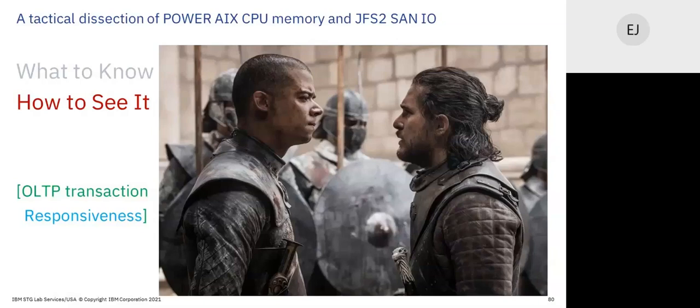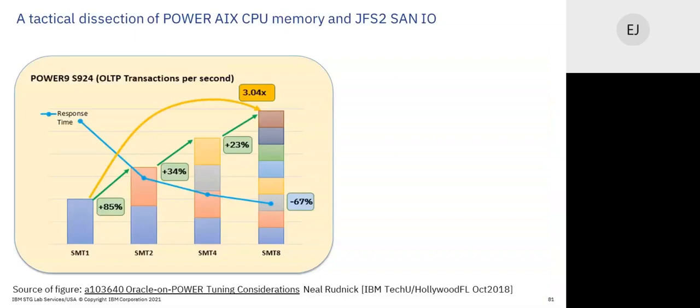You build a best-practice LPAR, run your transactions, they run real slow, and you wonder what's going on. That's why I'm teaching this. Neil Rudnick's chart shows SMT1, 2, 4, and 8: response time is very short and fast at SMT1 and SMT2, response time goes down at higher SMT, but throughput improves — you have a 300 percent improvement in throughput but your response time goes down.